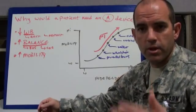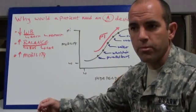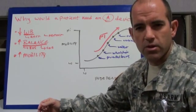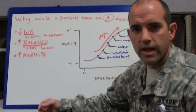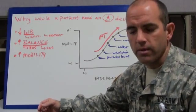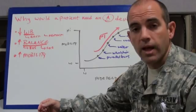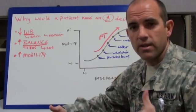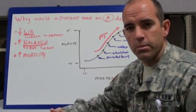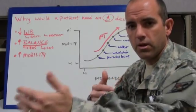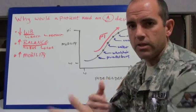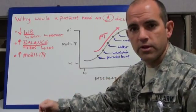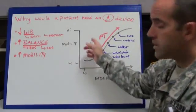And the final reason is mobility. In order to improve someone's mobility, they may be inefficient, or it requires a lot of work for them to ambulate. An assistive device gives them a little bit of a boost so they can achieve a greater range and improve their safety in doing that.